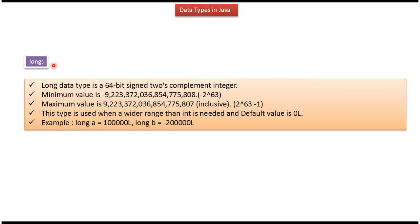Fourth data type is long. Long data type is a 64-bit signed two's complement integer. Here you can see the minimum value and here you can see the maximum value, and default value is zero. Here you can see how to declare long.